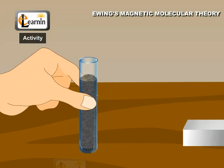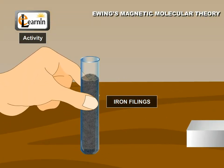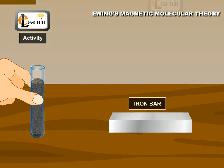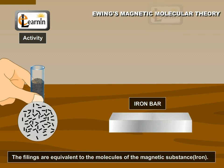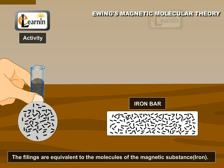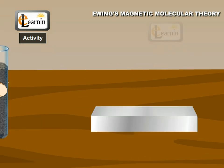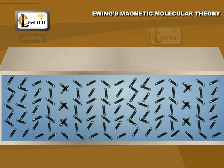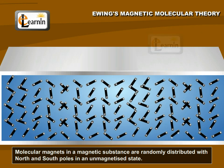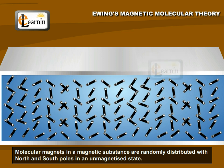A test tube containing iron filings in an unmagnetized state is like an ordinary iron bar. The filings are equivalent to the molecules of a magnetic substance. In an unmagnetized state, the molecular magnets in an iron bar are randomly distributed with their N and S poles pointing in all possible directions.